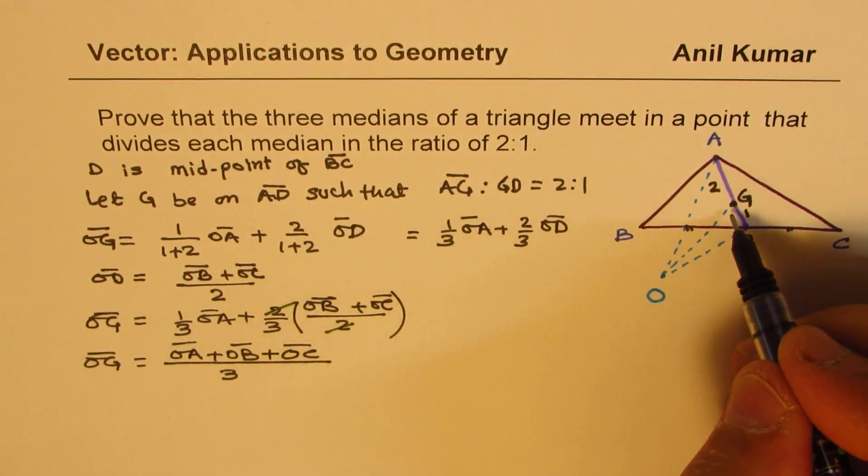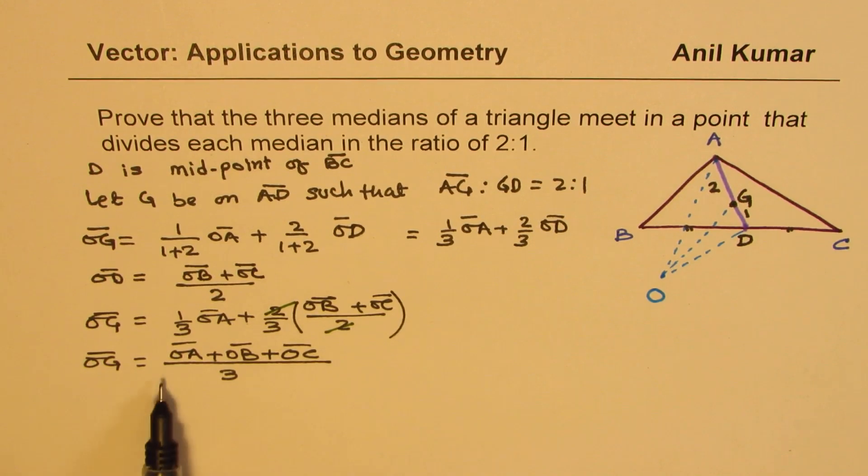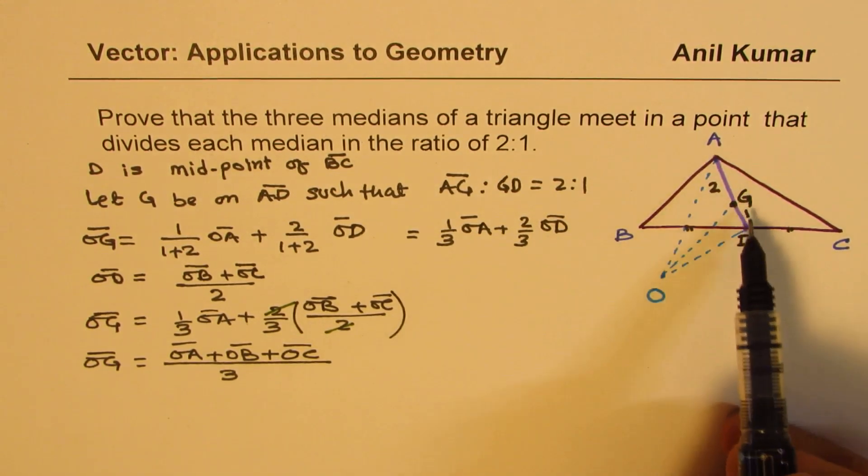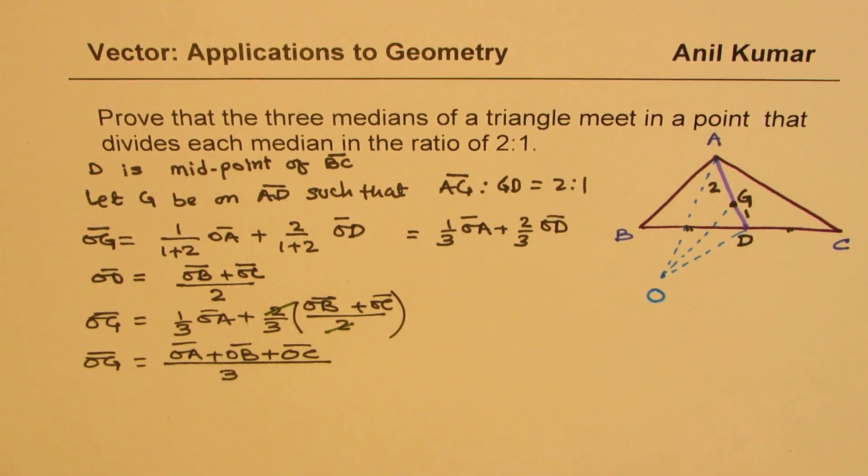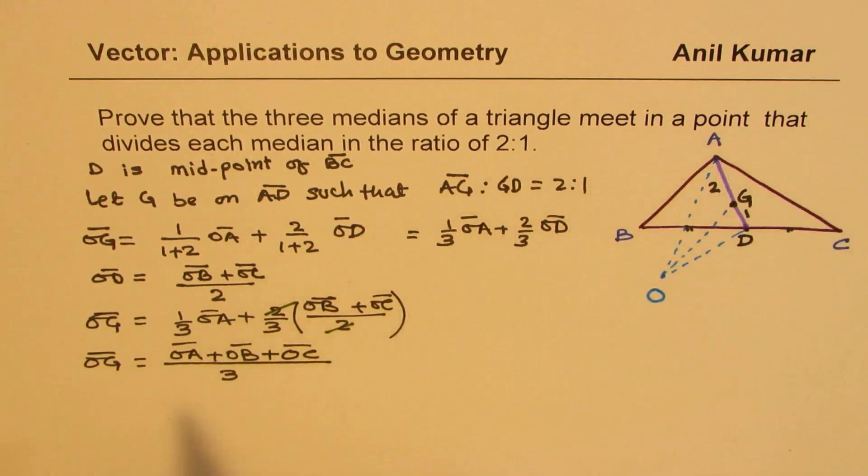Do you see that? So this point G could be represented as (OA + OB + OC)/3. Now as you know, this is the median. So OG is the average of all the three. That is the median. So what we did here was we took one median and then proved that OG is equal to all this.